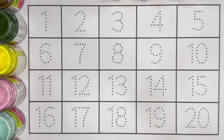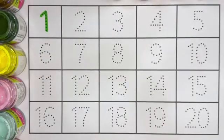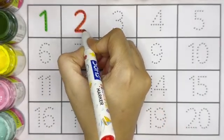Now let's trace the numbers. 1. Number 1. Green color. 2. Number 2. Red color.